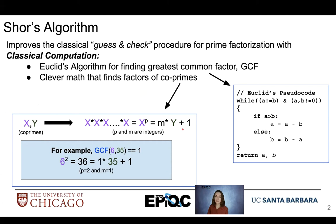So for example, we have two coprimes, 6 and 35. We know they're coprimes because their greatest common factor is 1, and we raise 6 to the 2 to get 36, or 1 times 35 plus 1. So in this example, we know that p is equal to 2 and n is equal to 1.